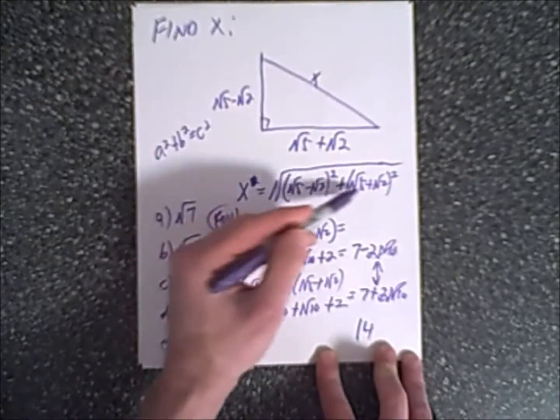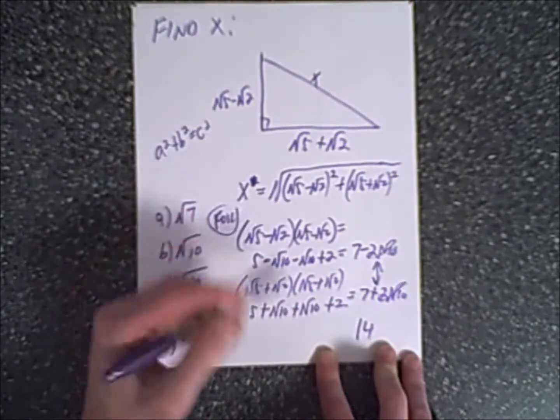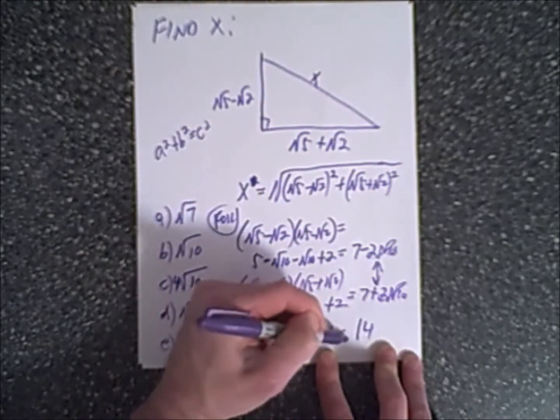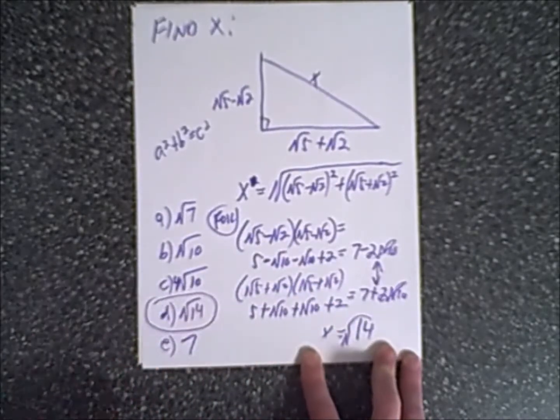Therefore, this plus this term under the radical is fourteen. Therefore, x is equal to the square root of fourteen, which is answer D.